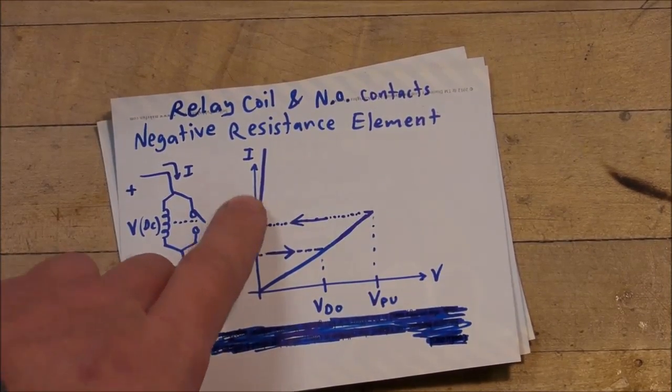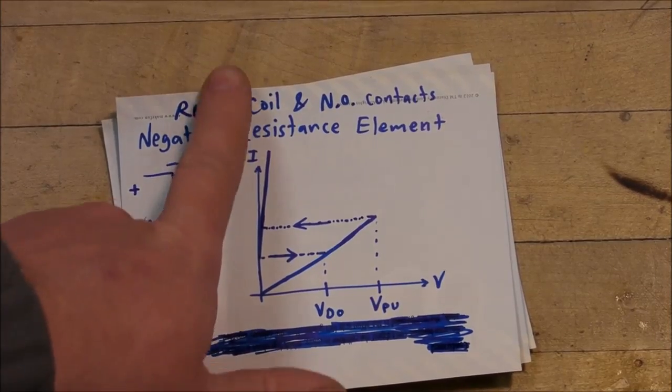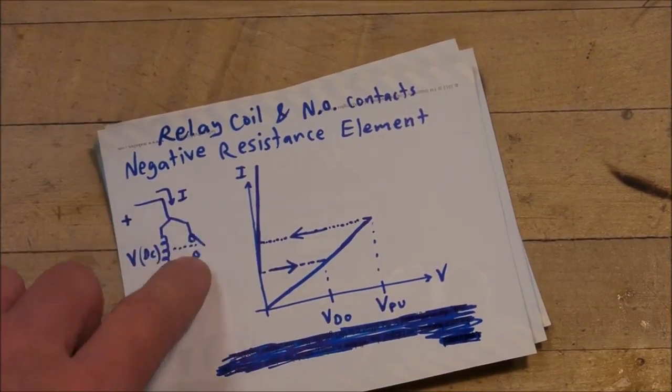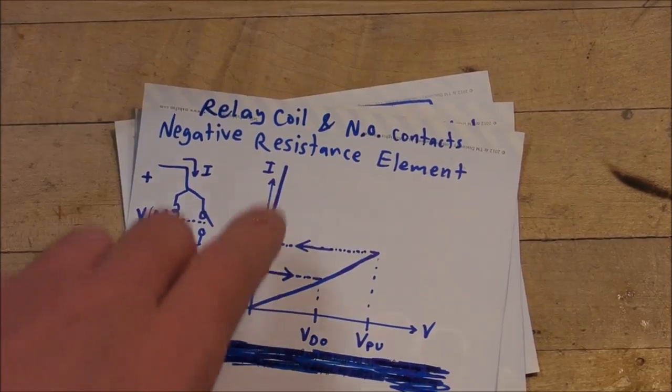I mean, if in the ideal case, it would be a perfectly vertical straight line. But of course, there is a little bit of resistance in the switch contacts.